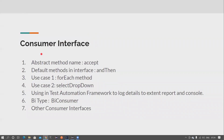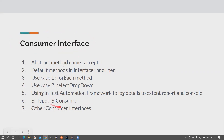Hi friends, welcome back to my channel Testing Minibytes. I'm your friend Amazon Shakti. In this video we will see about the BiConsumer. BiConsumer is a bi-type for your Consumer interface. The reason they have named it as Consumer is because it's consuming something. The abstract method available in the Consumer interface is named 'accept' because it is accepting some parameters. BiConsumer already indicates that it accepts two parameters.